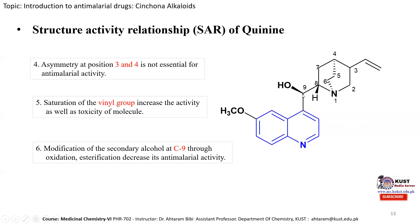At position 9, there is a secondary alcohol with an R stereogenic center. This secondary alcohol is compulsory for maximum activity. If it is oxidized to a ketone or esterified, anti-malarial activity decreases. Thus, the secondary alcohol at position 9 is essential for the activity of the quinine molecule.